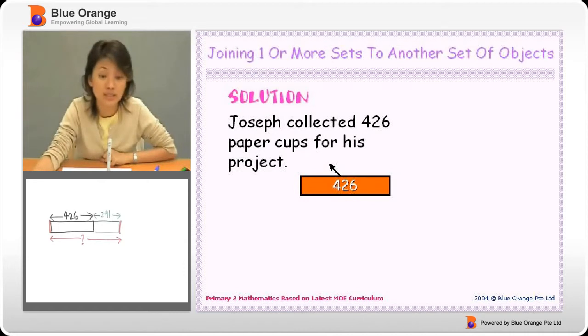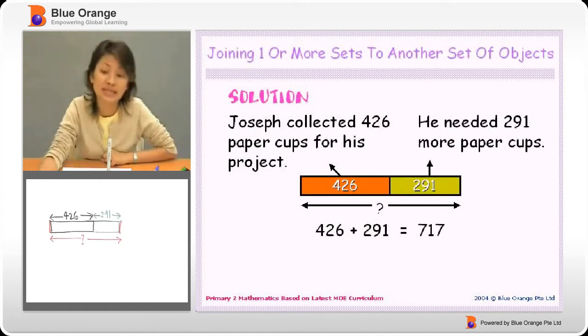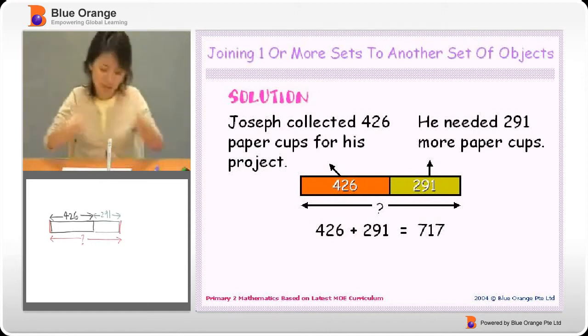Joseph collected 426 paper cups for his project. He needed 291 more paper cups. So we add. Put them together.